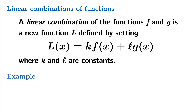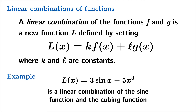So for example, l of x equals 3 sin x minus 5x cubed. This function is a linear combination of the sine function and the cubing function. 3 is playing the role of k and negative 5 is playing the role of l.